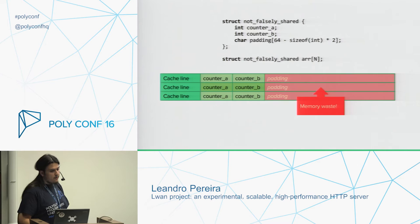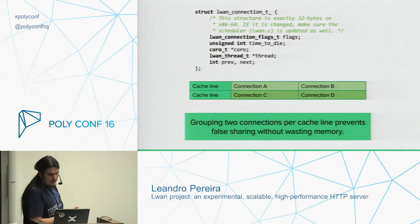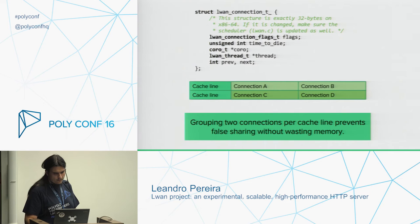There are ways to solve this problem, and I'm not aware of any that are not platform-specific. In this case, we assume each cache line holds 64 bytes, and we create padding to allow each core to operate independently without explicit locks. However, this wastes a lot of memory. Going back to that structure shown earlier, this is why the connection structure is exactly 32 bytes long — so two of them can fit on a single cache line.